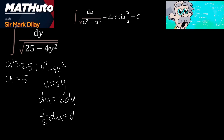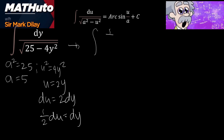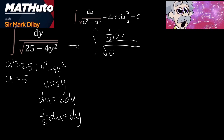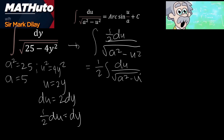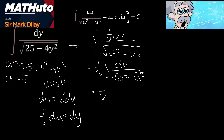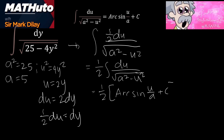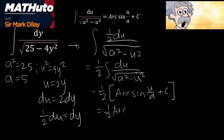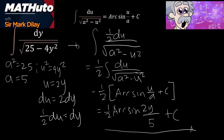u equals 2y, so du equals the derivative of 2y, which is 2dy. Divide both sides by 2: (1/2)du equals dy. Substitute: the integral becomes (1/2)du over the square root of a² minus u². Put (1/2) outside the integral sign. We have (1/2) times the integral of du over the square root of a² minus u². Apply the formula: (1/2) times arcsin(u/a) plus C. Substituting u = 2y and a = 5, the final result is (1/2) arcsin(2y/5) plus C.